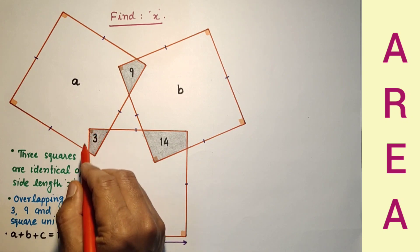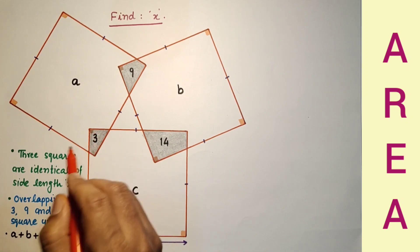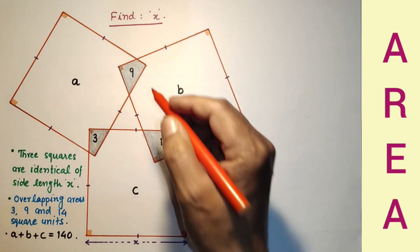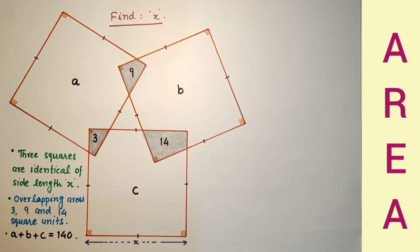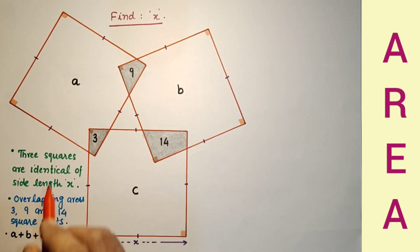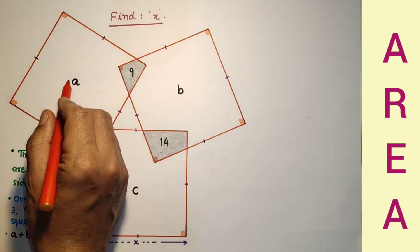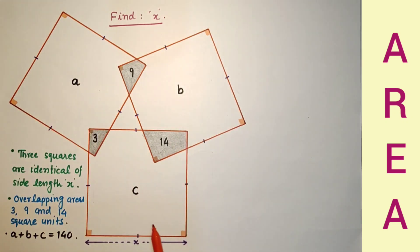This overlapping area is 3 square units, 9 square units, and 14 square units. The remaining part of this area is A, this is B, and this is C. This C area is this area only, and we have to find the length of the side of each square.